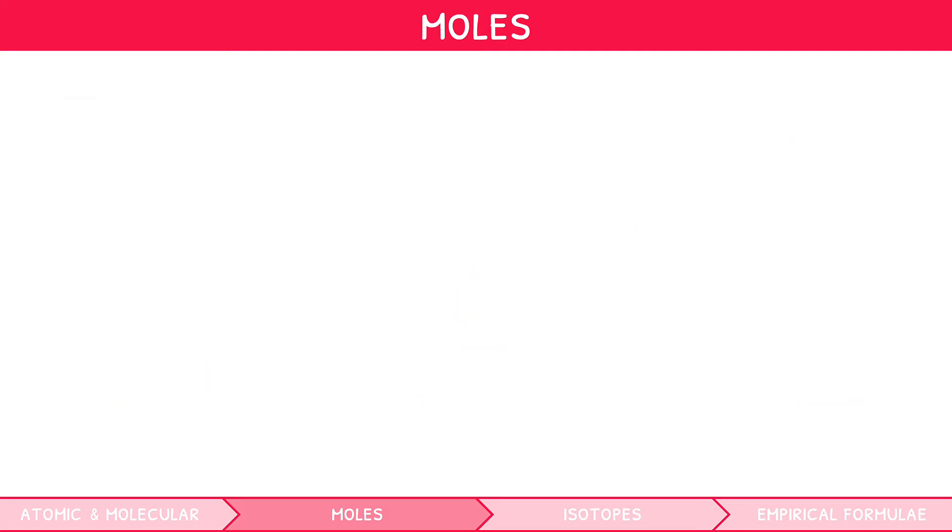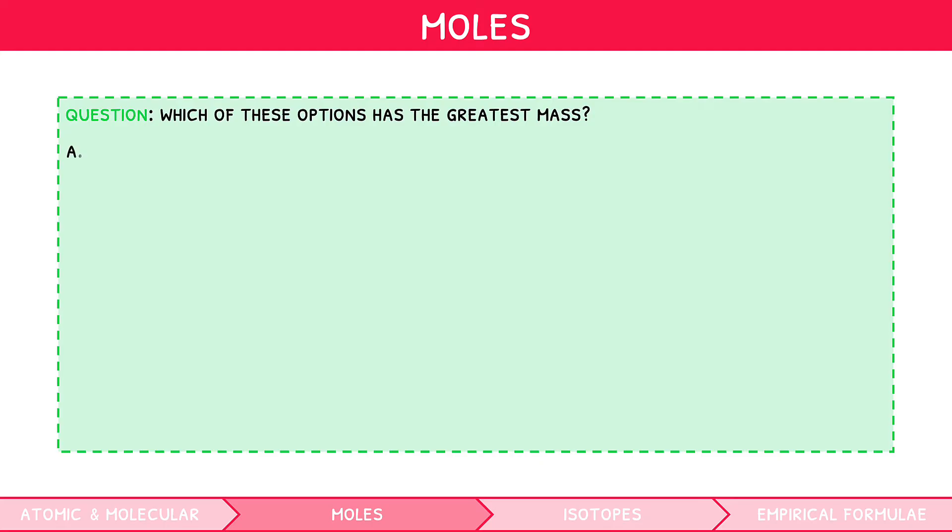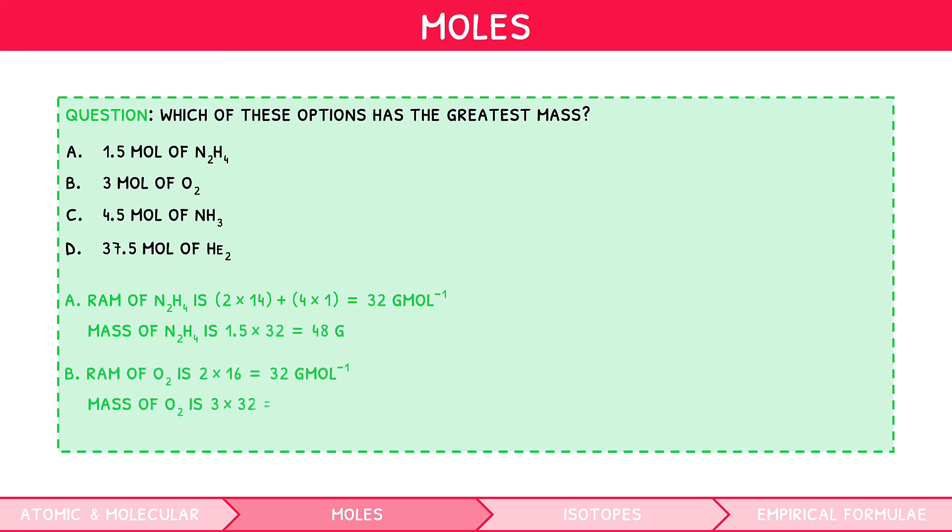For now, let's quickly show an example of how you could use the first of these formulas, mass divided by RAM equals moles. Which of these options has the greatest mass? 1.5 mole of N2H4, 3 mole of O2, 4.5 mole of NH3, or 37.5 mole of HE2? Using the triangle, we can say that mass equals moles times RAM. So, starting with option A, the RAM is calculated by summating all of the atomic masses of the constituent elements. This gives 32, which can then be multiplied by 1.5 to give a total of 48 grams. Repeating this process for the four options, it can be seen that option D is the correct answer.